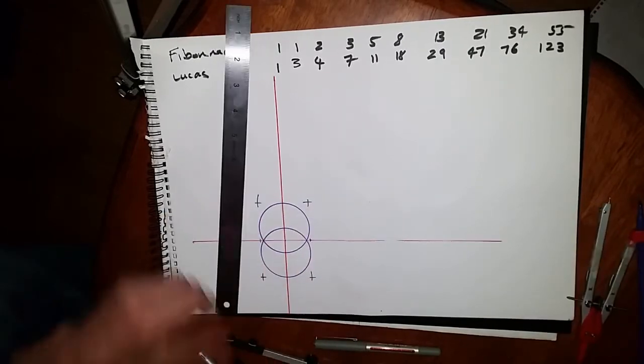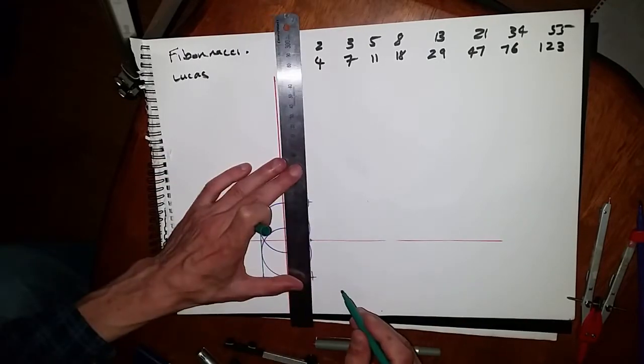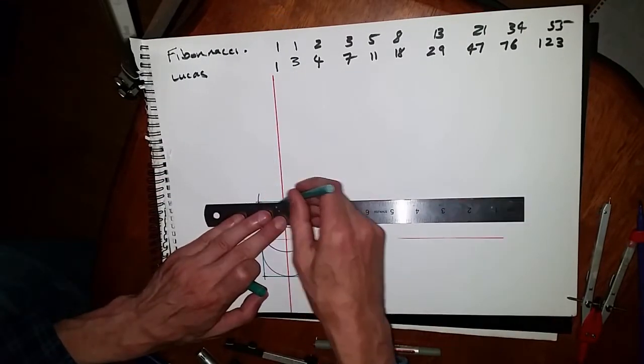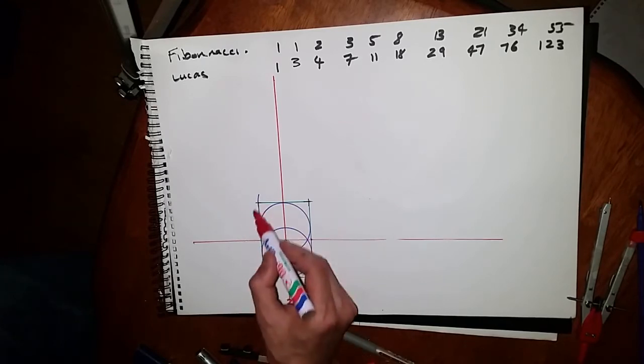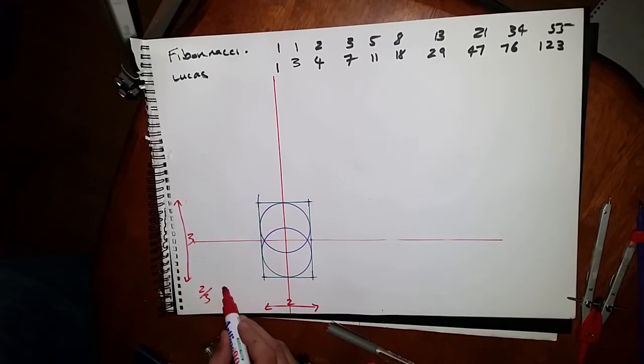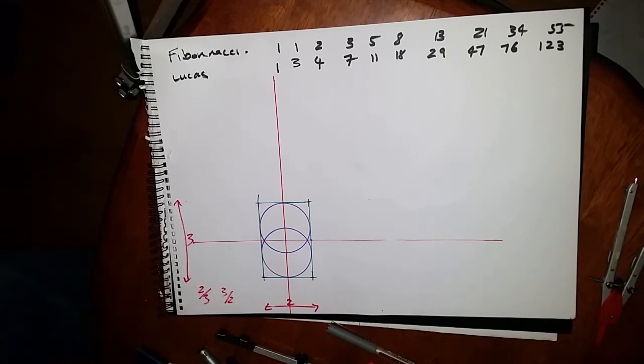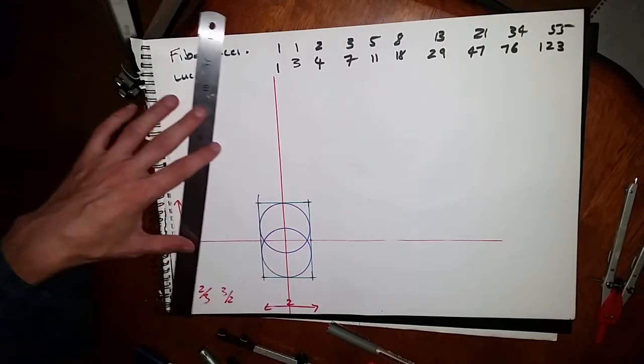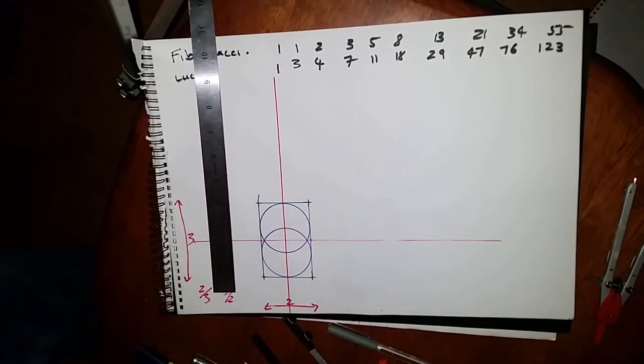Just like with Fibonacci, the 2 to 3, this time we're going to do the Lucas and we're going to begin with a 1 to 3 ratio. So this rectangle we're just going to cut it in half down the long edge, and therefore now create a 1 to 3 rectangle.